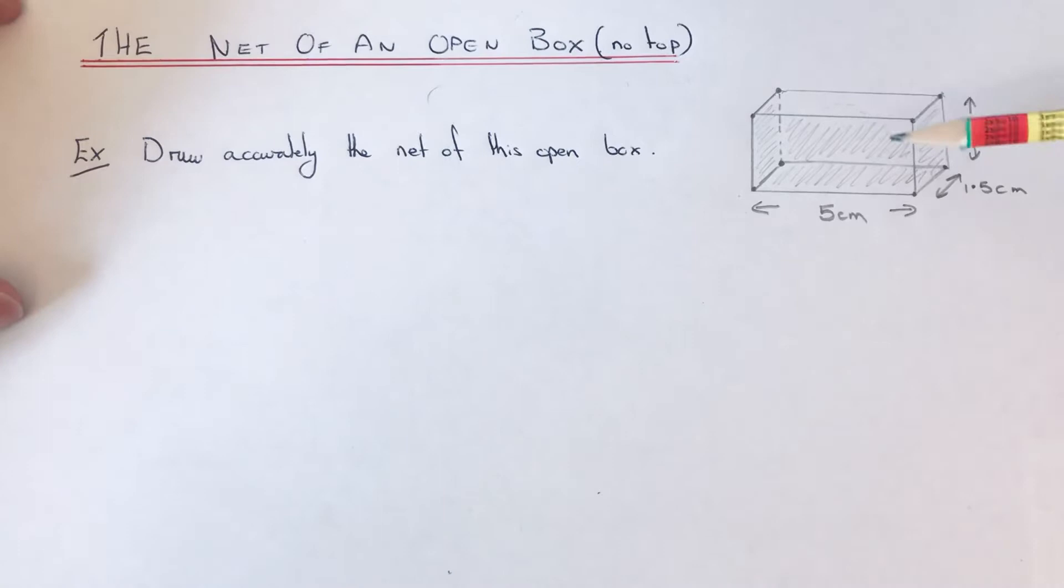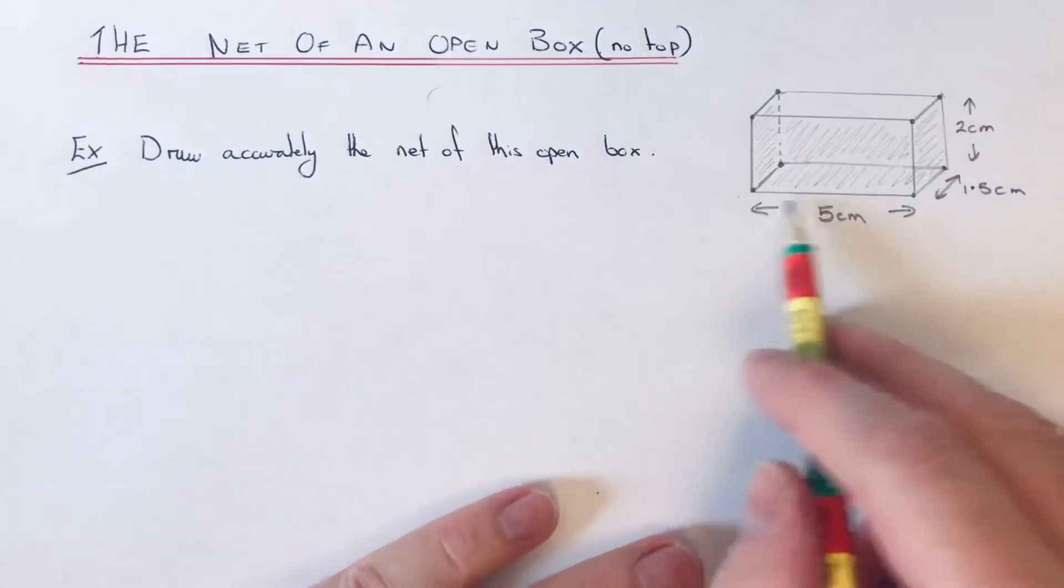The cuboid that we're going to draw has five faces, not the usual six, because the top's missing. Let's have a go drawing the net of this open box.